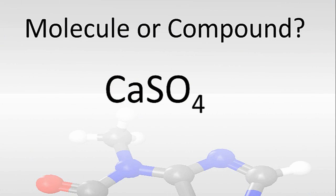One last one here. Calcium sulfate. We have calcium, sulfur, and four oxygens. We have more than two elements chemically bonded. That's a molecule. And then they're different. We have the calcium, sulfur, and oxygen, so it's also a compound.